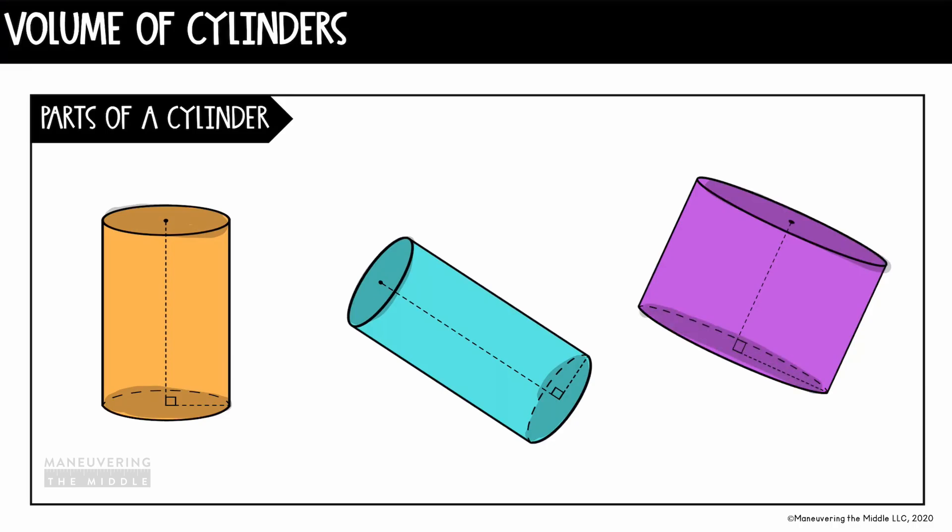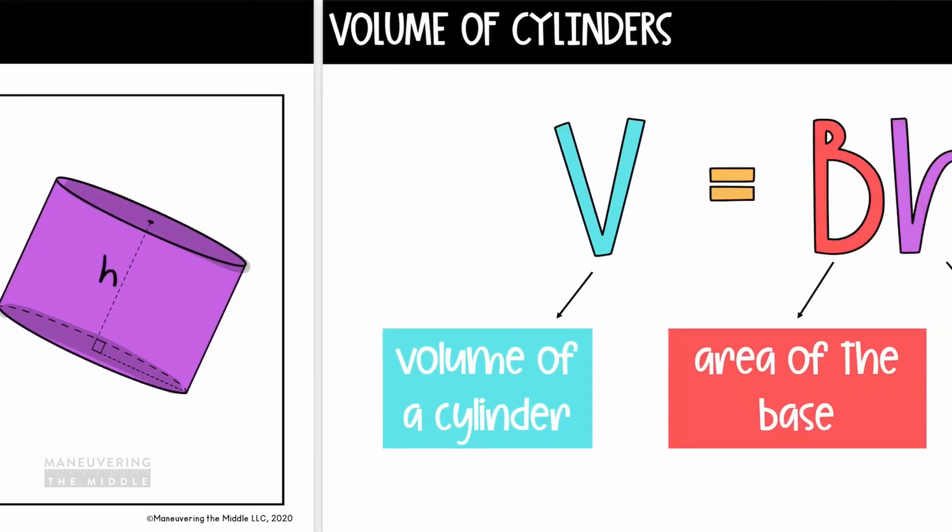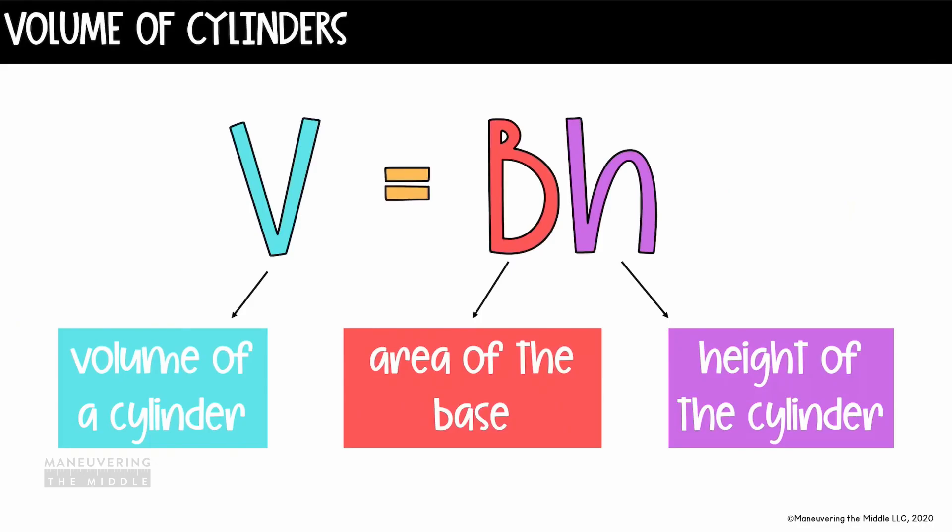Next, let's make sure we understand the height of a cylinder. The height is simply the distance between those two circular faces. So here I've labeled the height of each of these cylinders. It's important to know those parts so that we can correctly use the formula to find the volume of a cylinder, which says that the volume equals B, or capital B, times H.